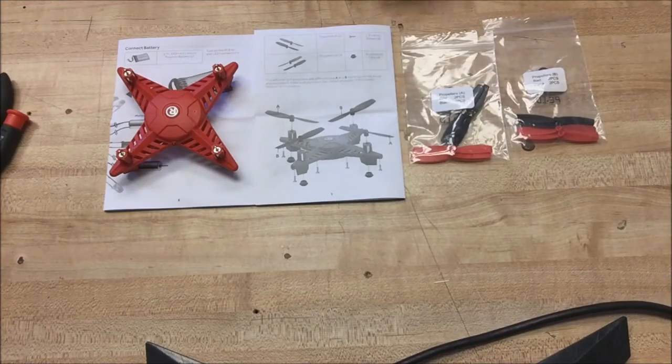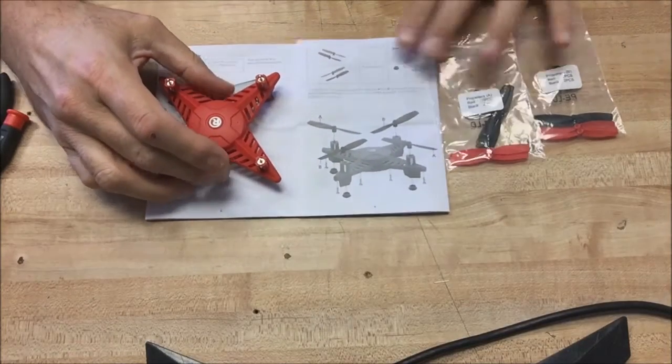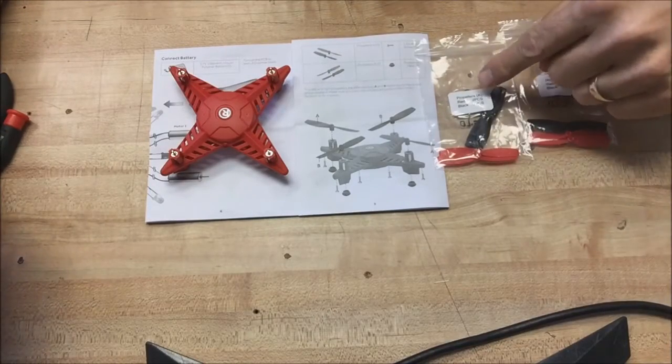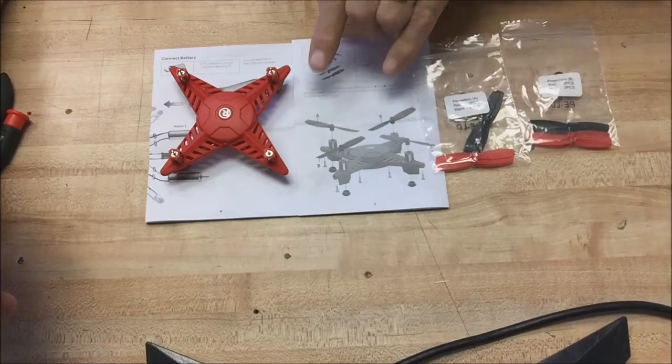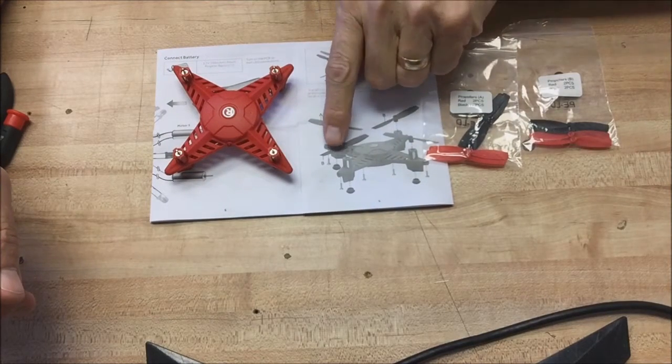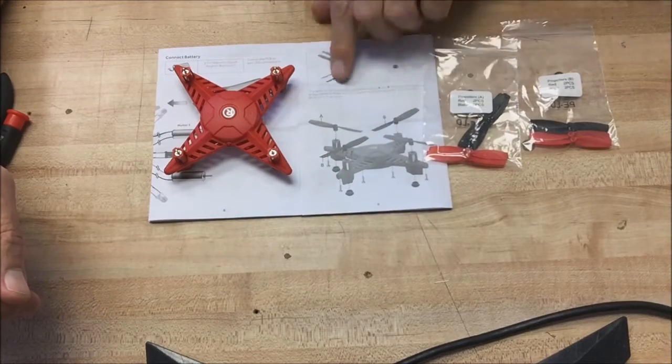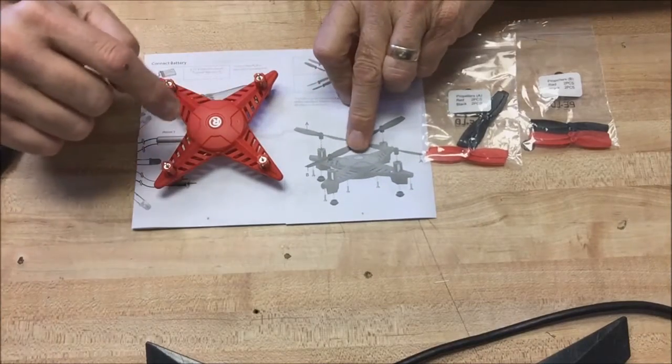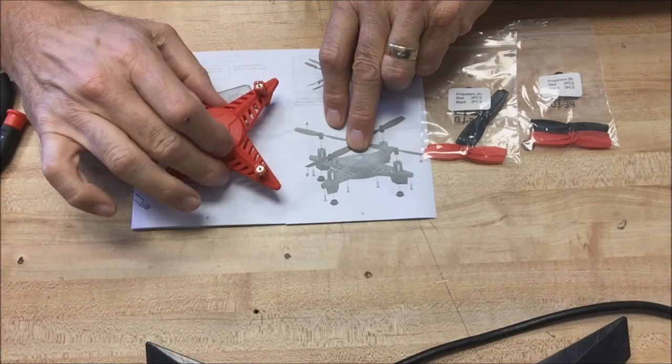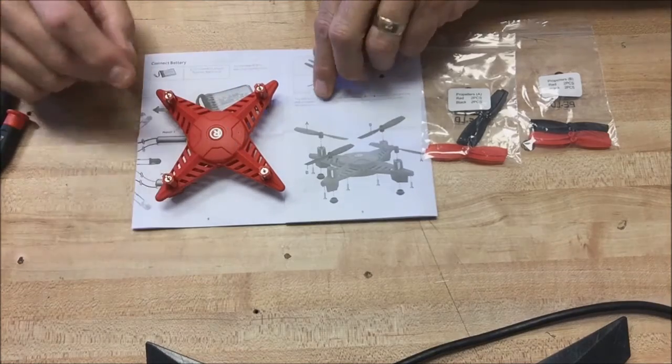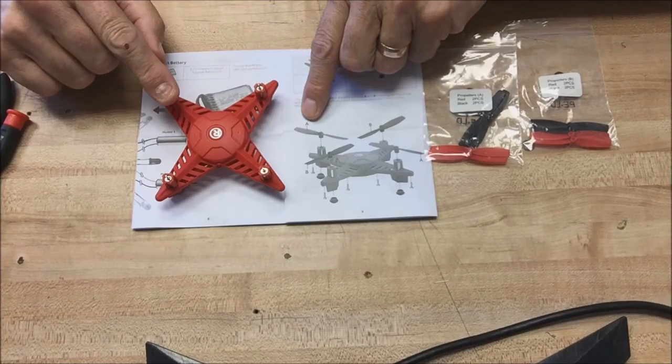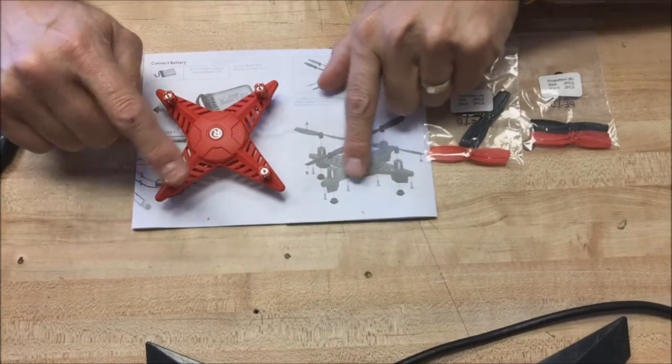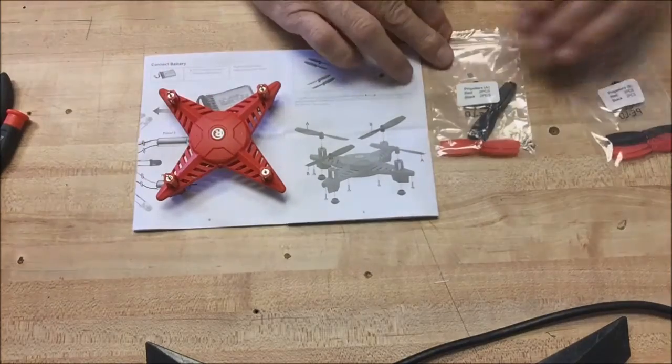The last thing we have to do is put the propellers on. So you're going to notice that we have propellers A and propellers B. So it shows us propeller A, B, and propeller B and A. So what I'm going to do is I've got this set up so that the R is facing the exact same way. So I've got everything going the way I want to. That means this one's going to have a propeller A. This one's going to have a propeller B. This one's going to have a propeller B. And this one's going to have a propeller A. So here we go.